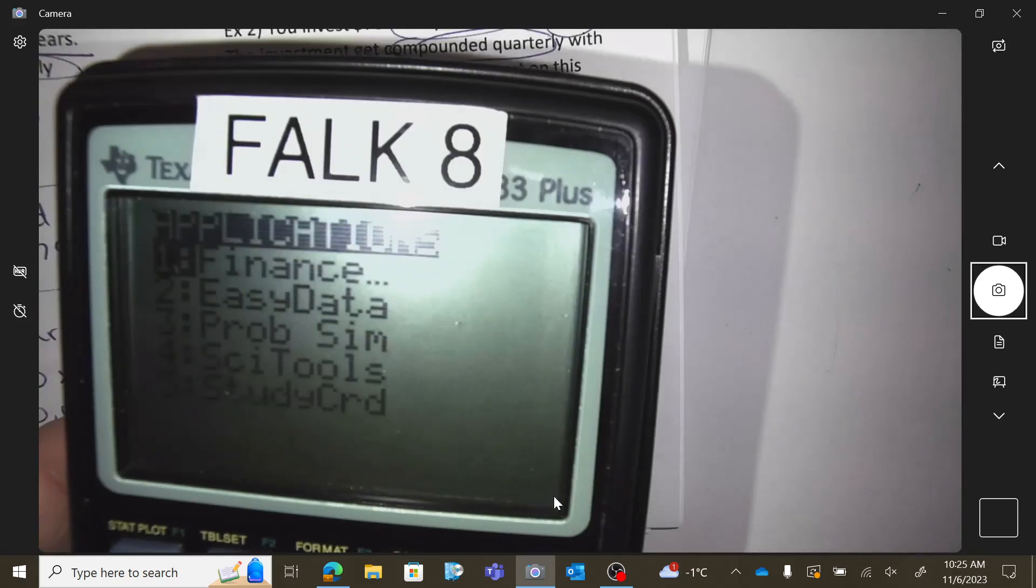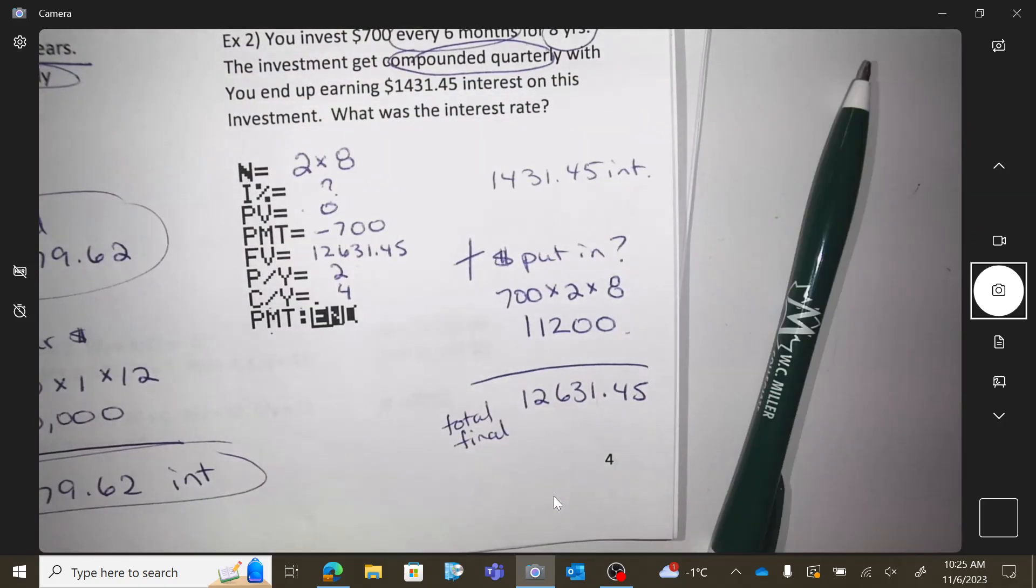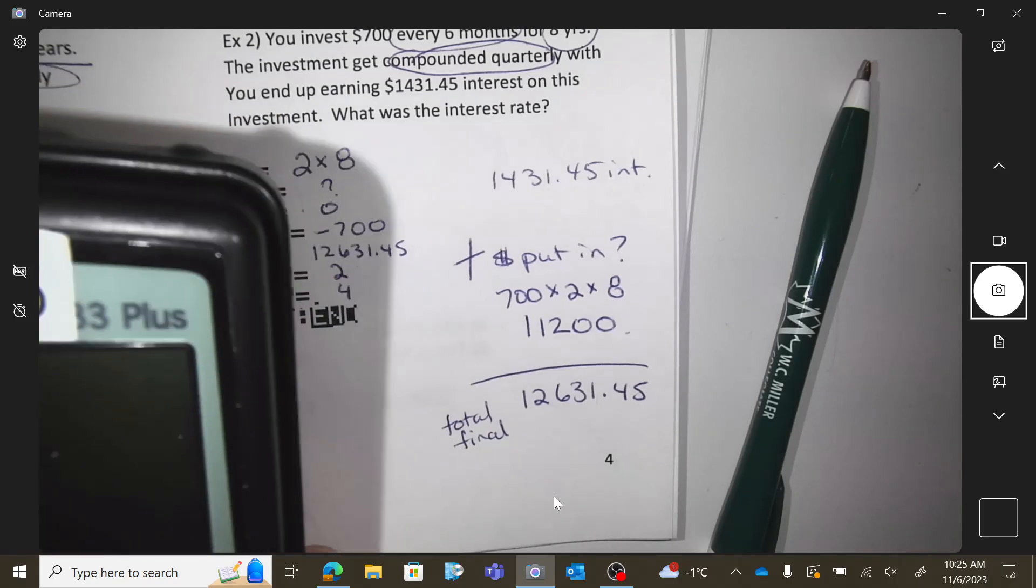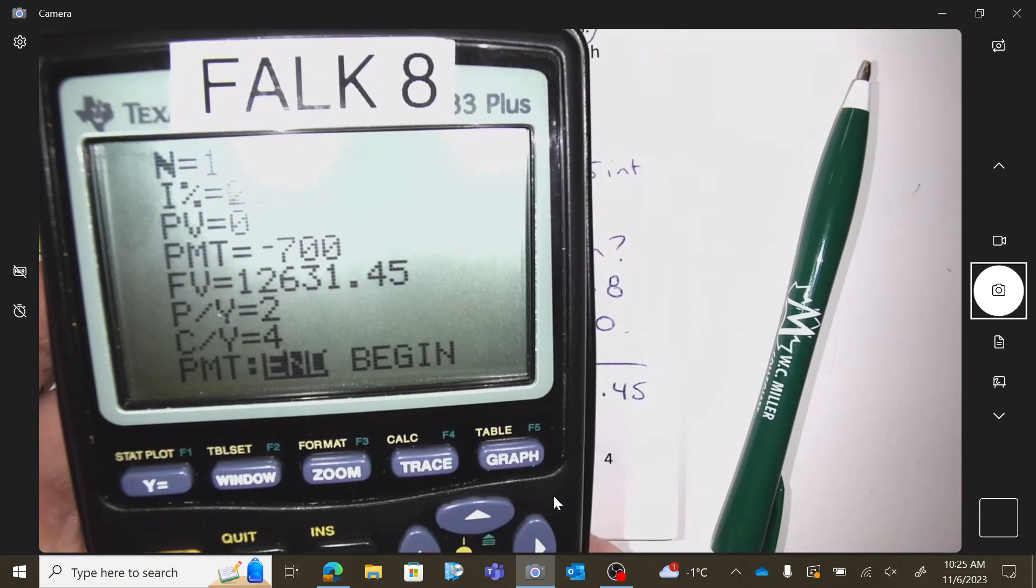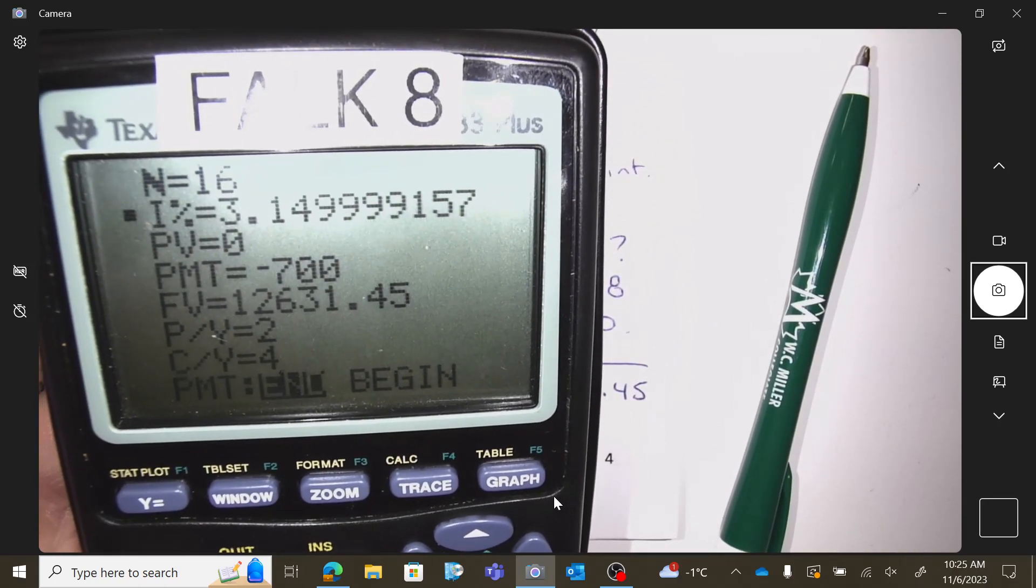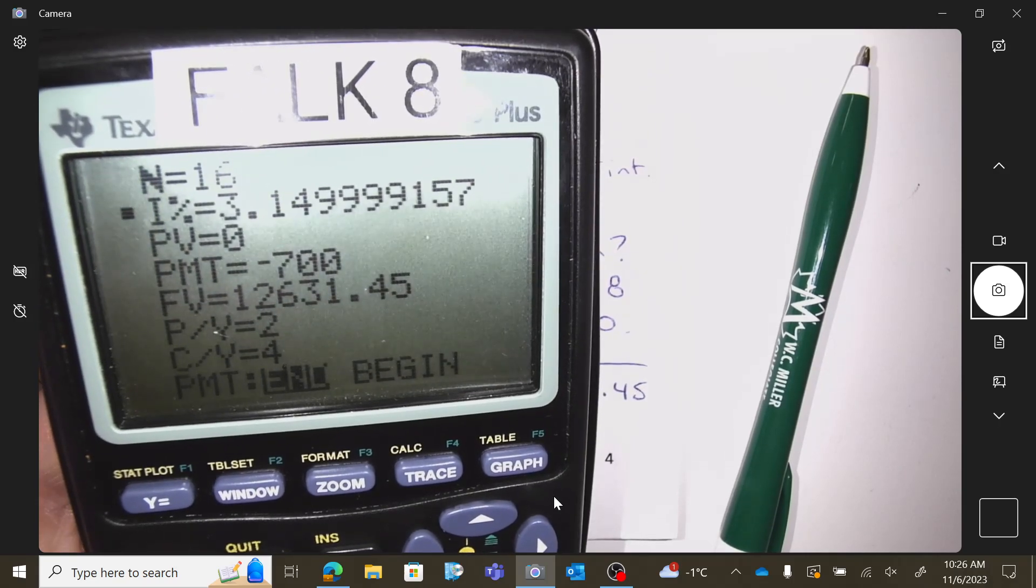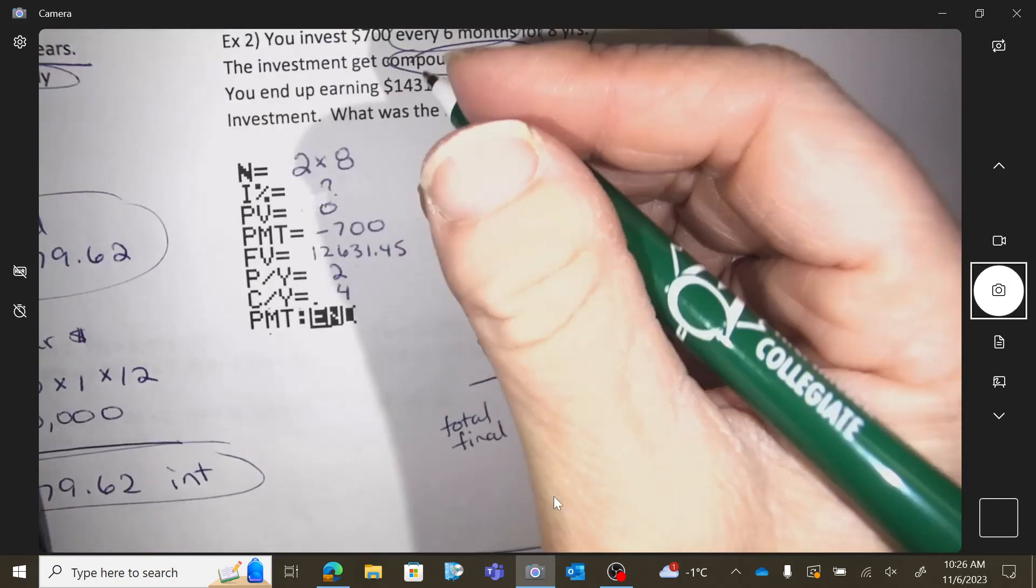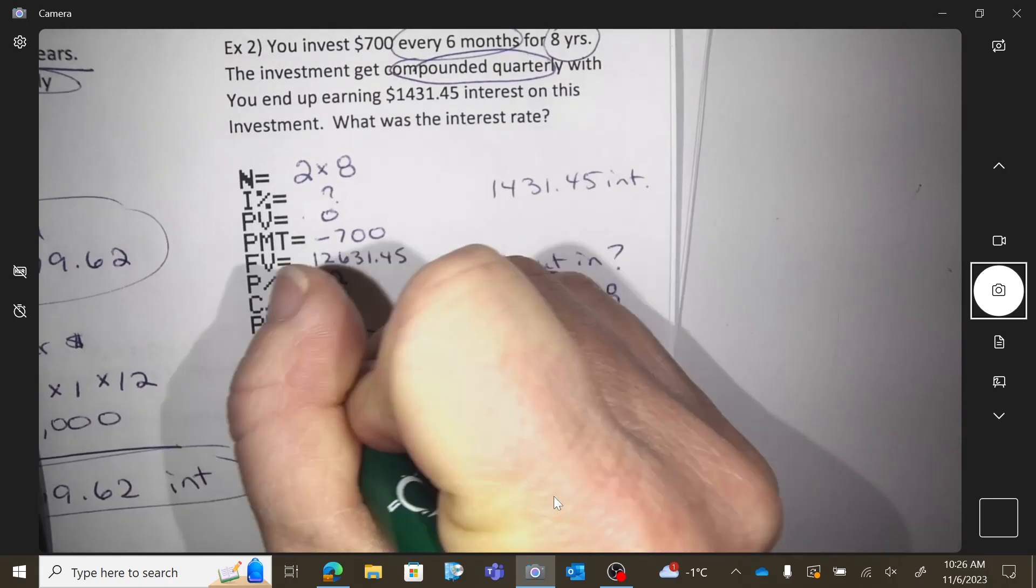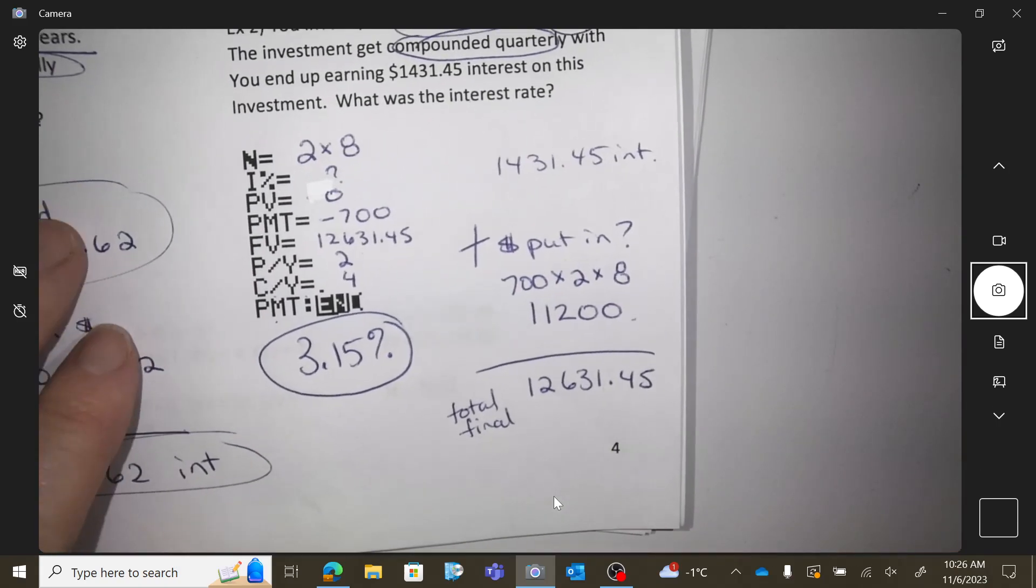So give me your apps, finance, solver. Okay, alpha, enter. And I'm getting 3.15%. Are we matching? 3.15? Okay. All right.